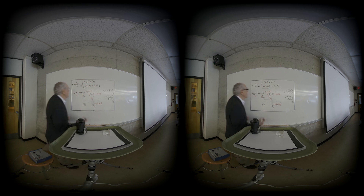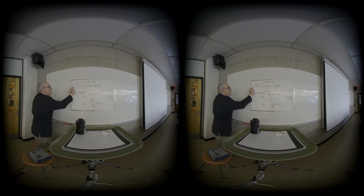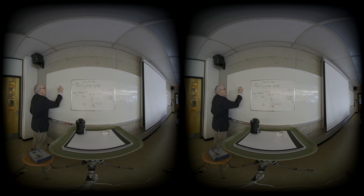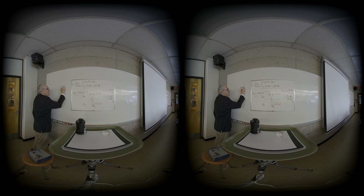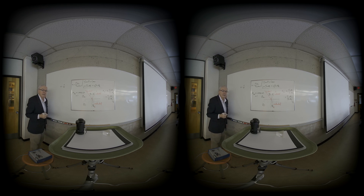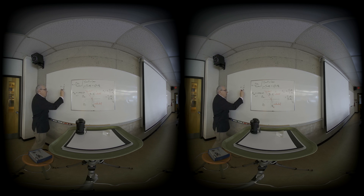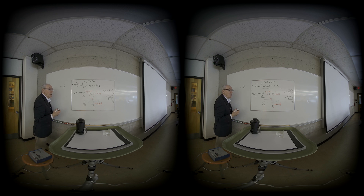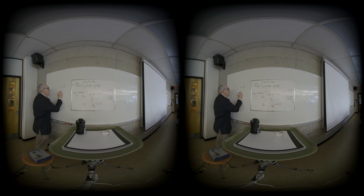Looking at this equation, n is equal to the speed of light in vacuum over the speed of light in the material itself. The speed of light in the material will actually vary depending on the wavelength.